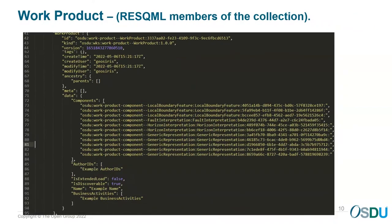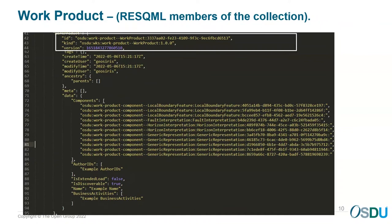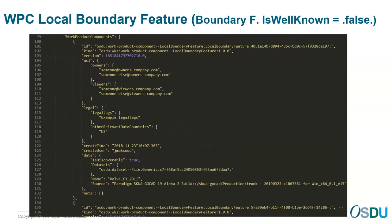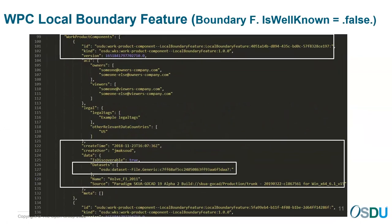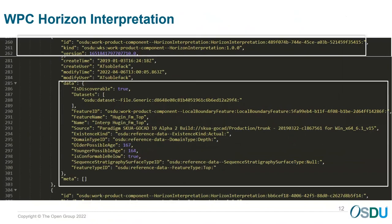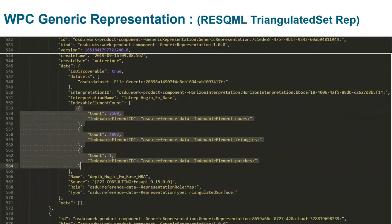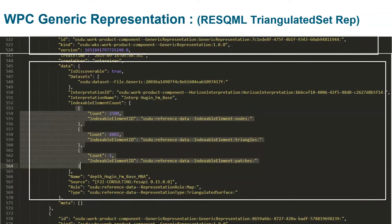What is interesting to examine is the result of the collection, which is transported into a work product component. You have the list of what we have in the ResQML and the same view in OSDU — for example, the local boundary feature. We can also have a horizon interpretation where all the metadata relevant for OSDU is captured and stored. The same applies to fault interpretations, with a way to represent information about generic interpretations.